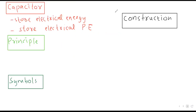So first of all, we have the capacitor. Definition of capacitor: a capacitor is a device which is used to store electrical energy. Some definitions also state it is used to store electric charge.